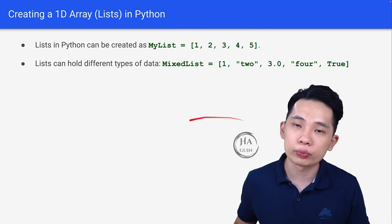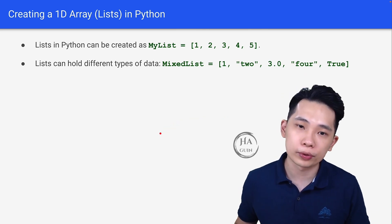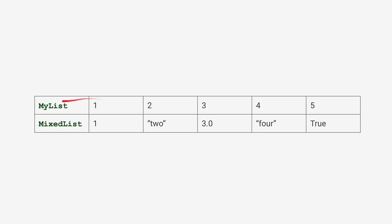Below here is the example: my_list = [1, 2, 3, 4, 5] and mixList = [1, '2', 3.0, '4', True].